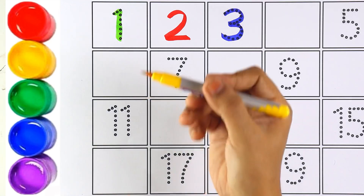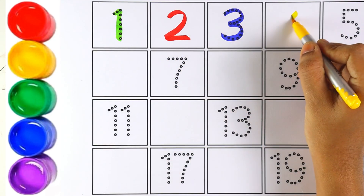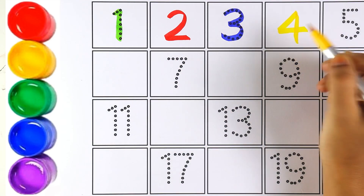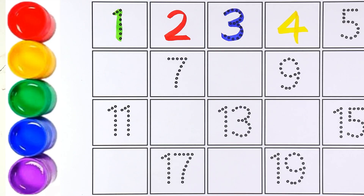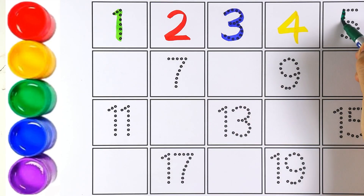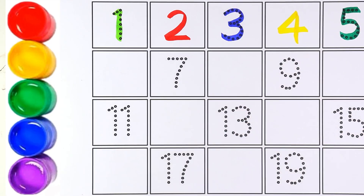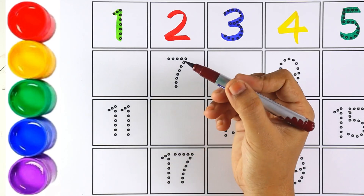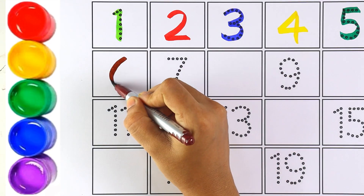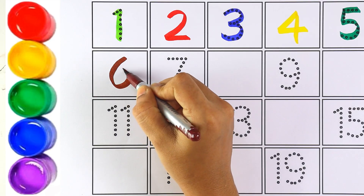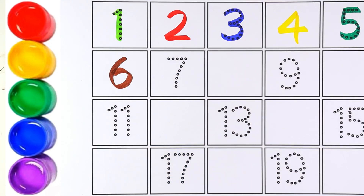Yellow color, number four. Kids, repeat after me — number four, that's right! Green color, number five. Number five. The next number is six, and I'm writing number six with brown color. Number six — that's right!